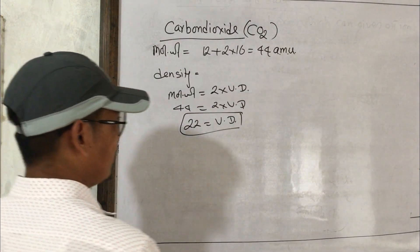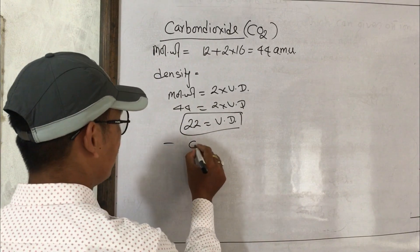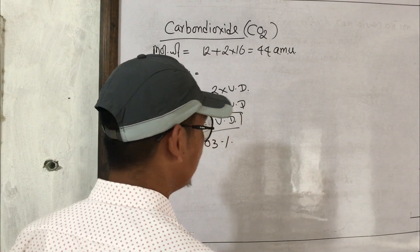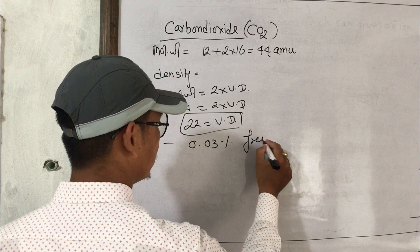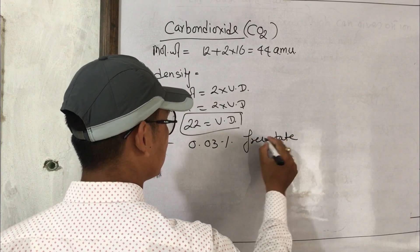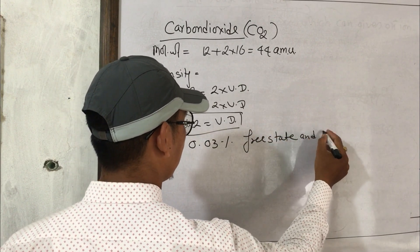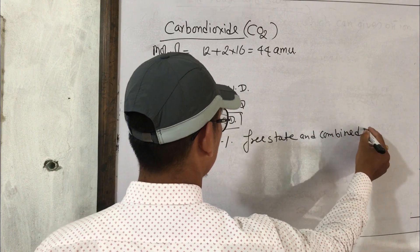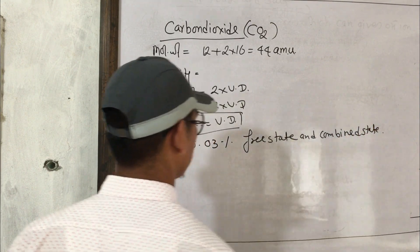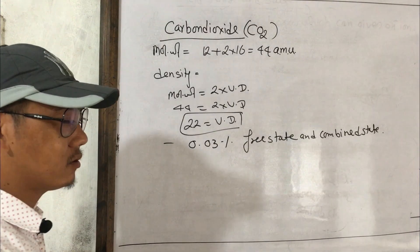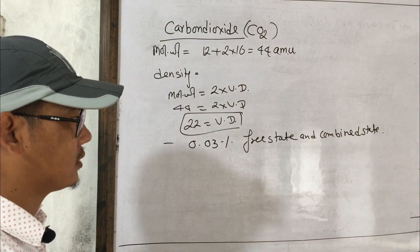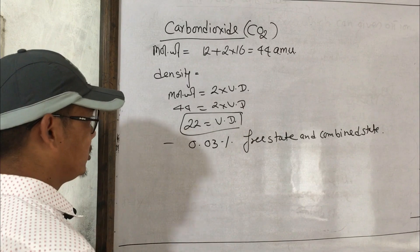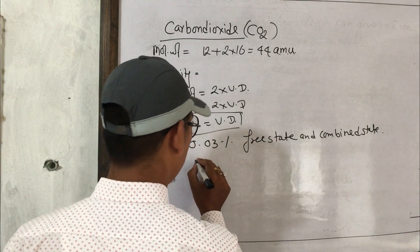In the environment, CO2 is found at about 0.03%. CO2 is found in free state and in combined state. In combined state it is also found in various forms.